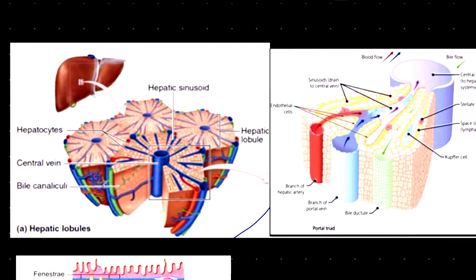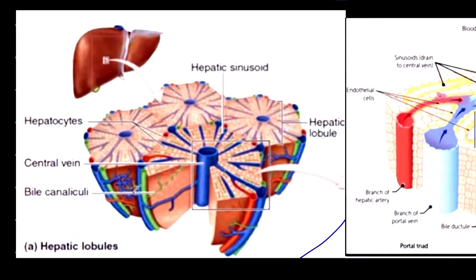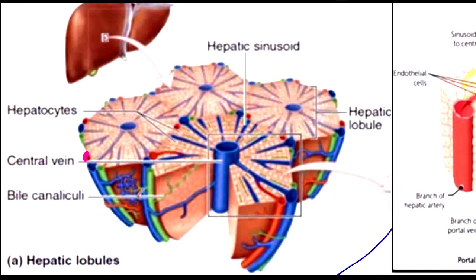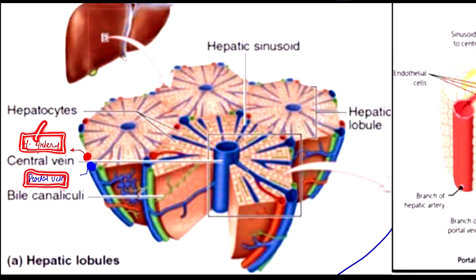The first important thing to know is that the liver has a dual blood supply. Looking at the section, we can see a red structure and a blue structure. The red structure is our hepatic artery, and the blue structure is our portal vein.